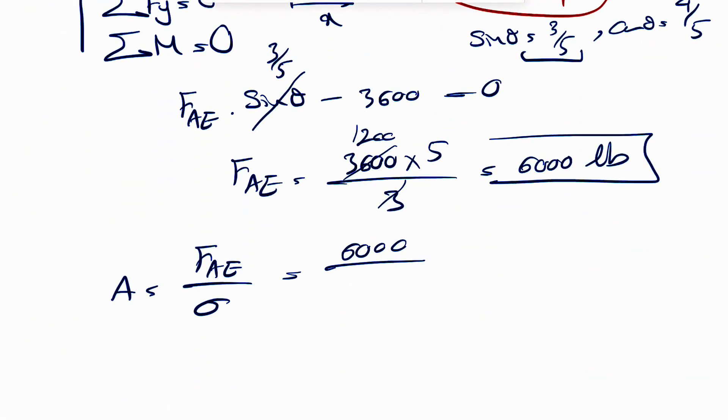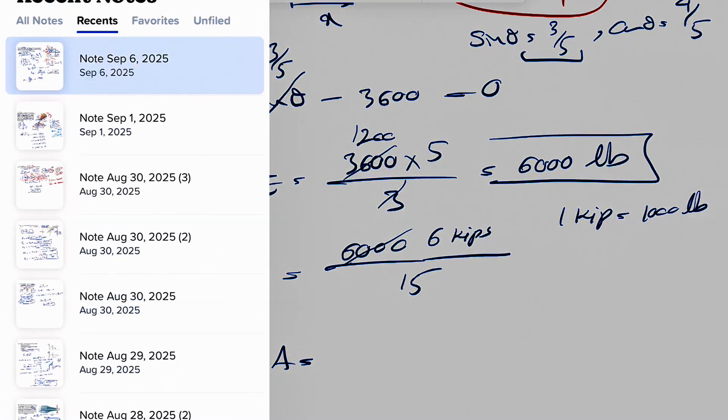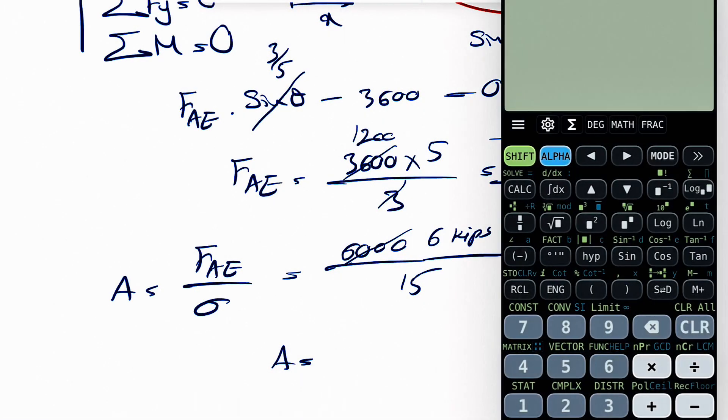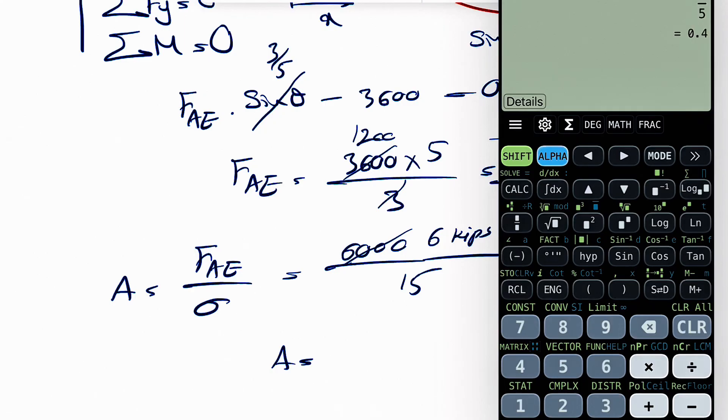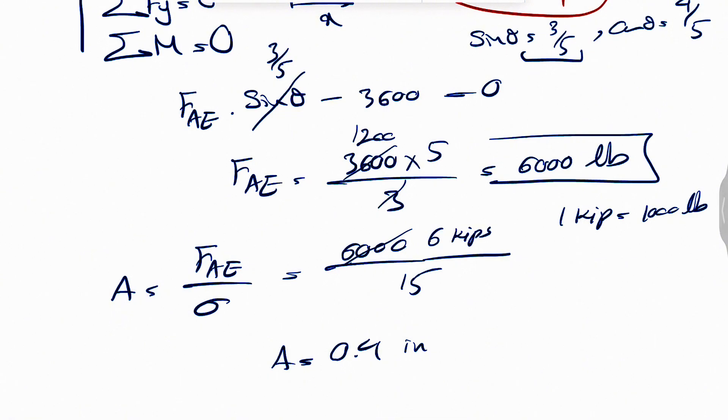We just have to watch for the units. We know KSI is kips per inch squared, and we know one kip is equal to 1000 pounds. So either we can convert this to kips, so six kips over our stress, which was 15, or 0.4 inches squared.